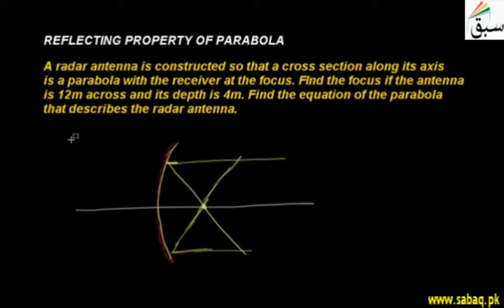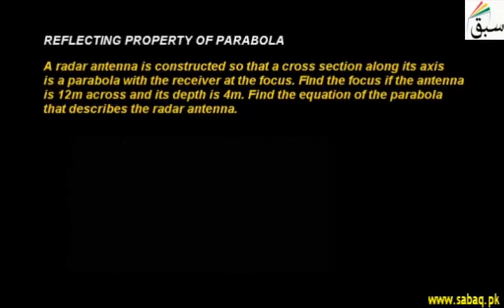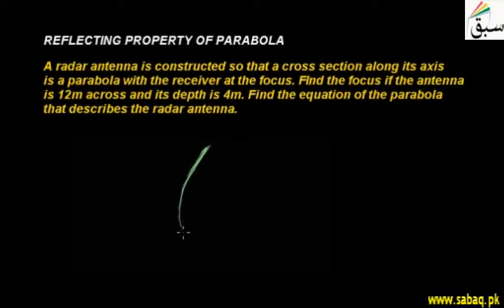Now we have a numerical. A radar antenna is constructed so that a cross section along its axis is a parabola with the receiver at the focus. This is a radar antenna in parabolic form — the receiver, after reflection from the object, will receive the radio waves.